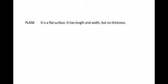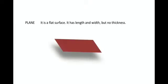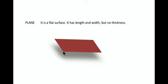Next is a plane. The screen that you can see here is a plane. A blackboard is a plane. A table surface is a plane. So it is a flat surface, and it has length and width, but no thickness. This is the length — the longer portion — and this is the breadth or width, but it has no thickness. It's like a sheet of paper which has very negligible thickness. So this represents a plane.